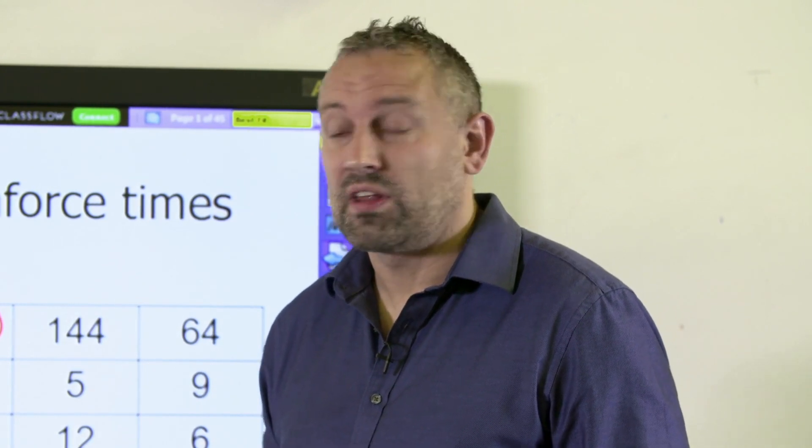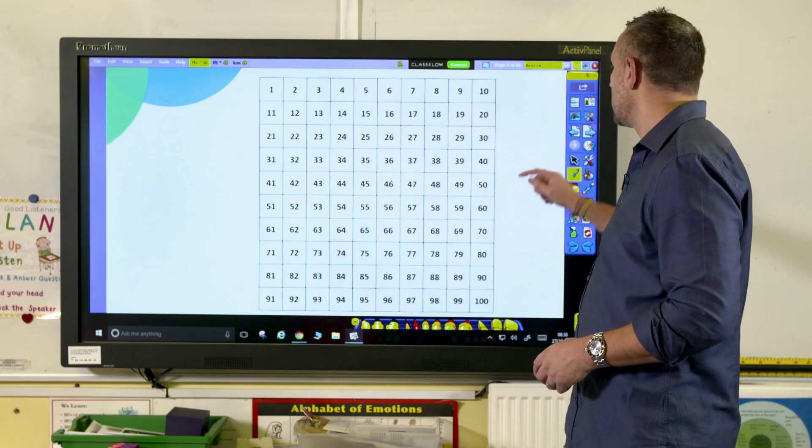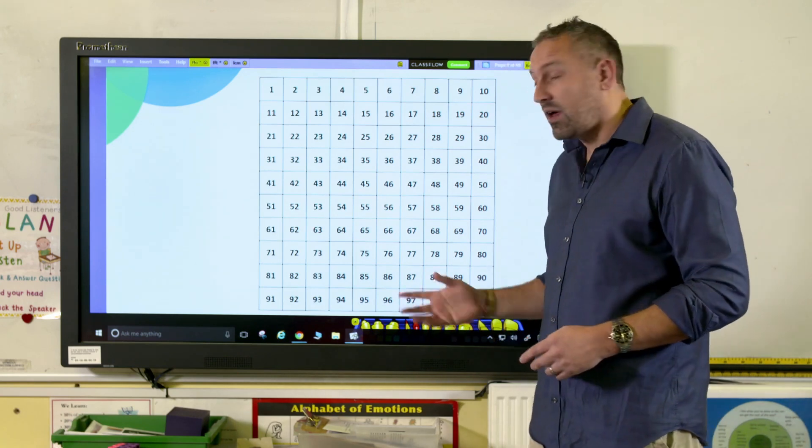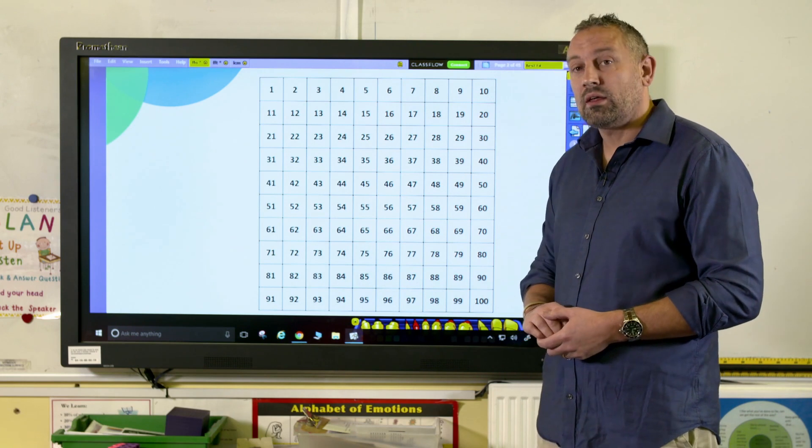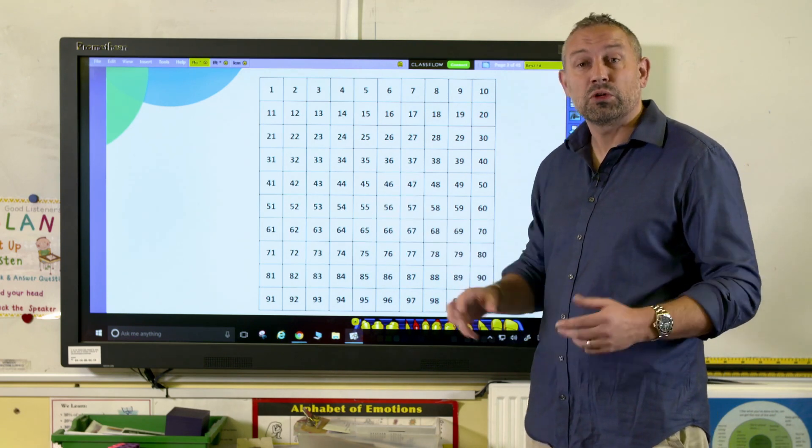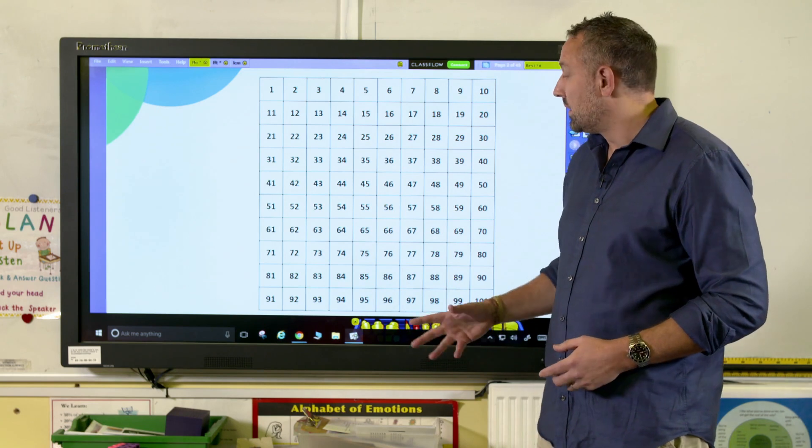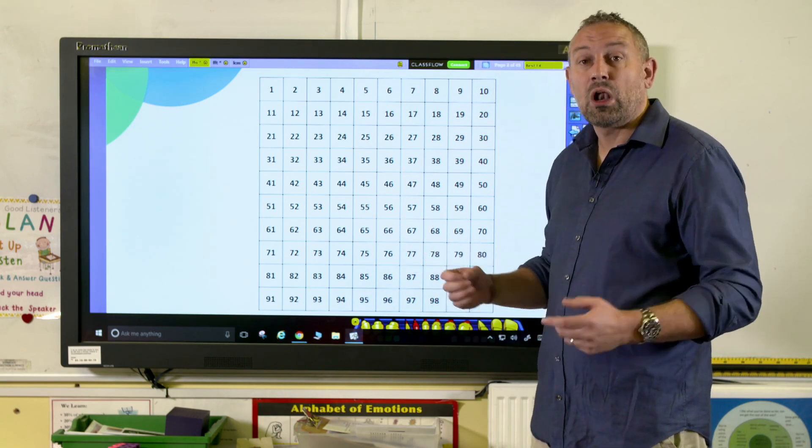Counters are really good for this. Now a hundred square, really useful tool in any classroom. What the children can do here is concentrate on factors and multiples, which we've talked about in previous videos. So the child will choose a number below 50, for example 24.